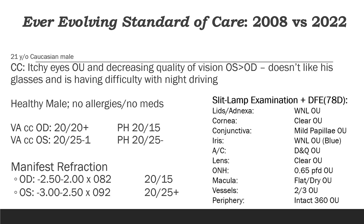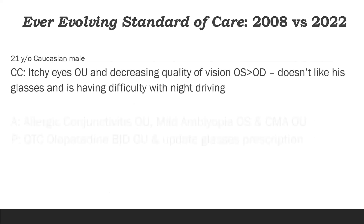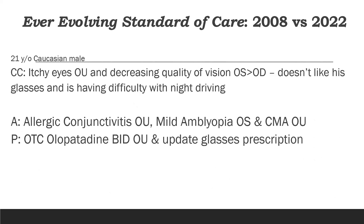We do our traditional slit lamp exam and dilated fundus exam. We find some papillae in the lids, which explains some of the itching. We see cupping with a 0.65 cup-to-disc ratio in each eye, which has to be investigated. The retina looks flat and intact with no holes or tears. Do we just say allergic conjunctivitis with mild amblyopia in the left eye due to astigmatism and give a glasses prescription with over-the-counter olopatadine for allergy?